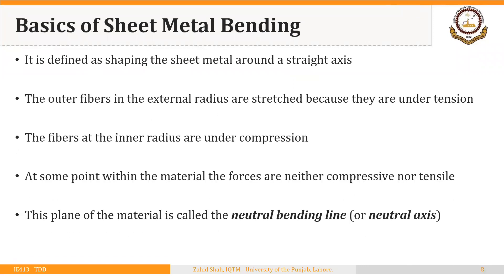Sheet metal bending is defined as shaping the sheet metal along a straight axis. The outer fibers at the external radius are stretched because they are under tension, and the fibers at the inner radius are under compression. At some point within the material the fibers are neither under compression nor tension, so this plane of the material is called the neutral bending line or neutral axis, and most of the calculations in sheet metal bending are based on this neutral bending line.